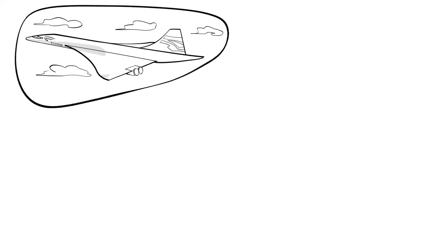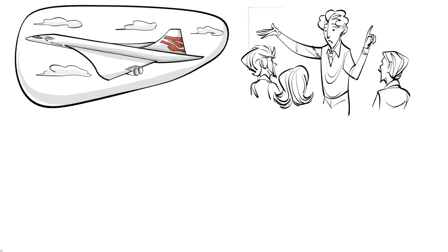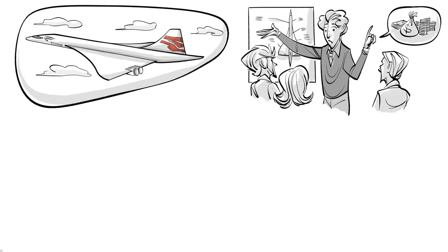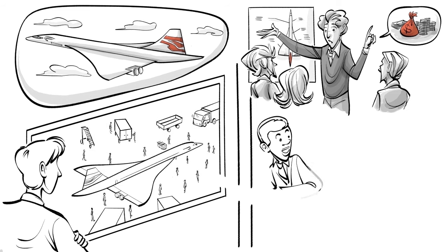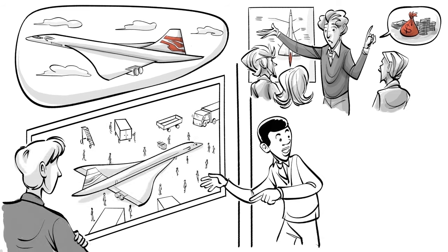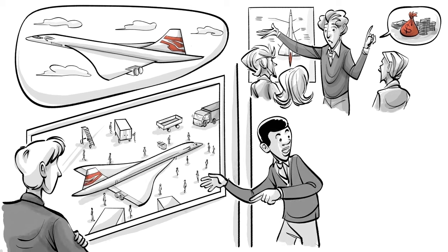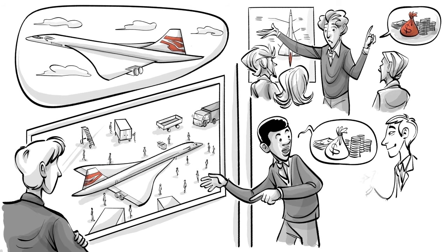A more famous example of the fallacy is the Concorde, the supersonic passenger plane. Building the aircraft proved to be very difficult and expensive, but instead of shutting down the project, the British and French governments continued funding it, even though they knew the aircraft would not have any economic benefit. They argued that they had invested too much to give up.